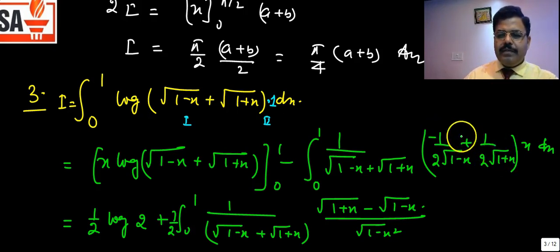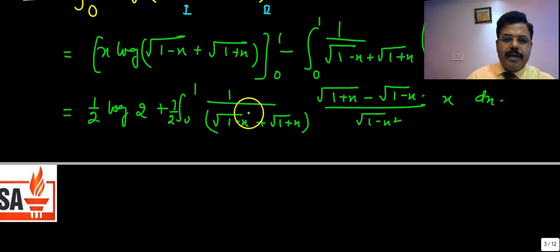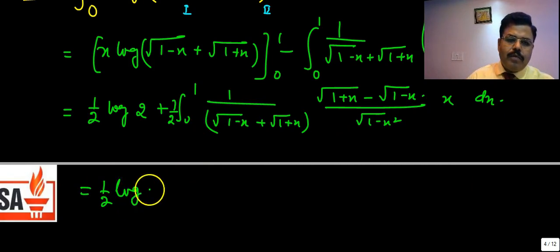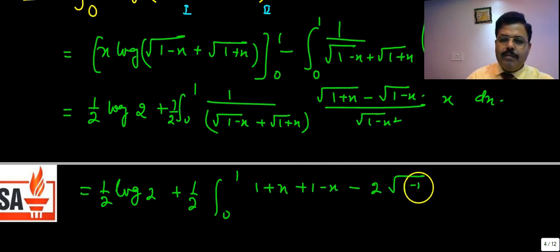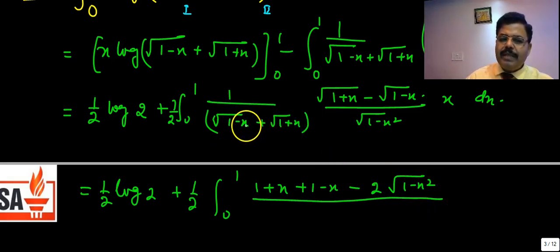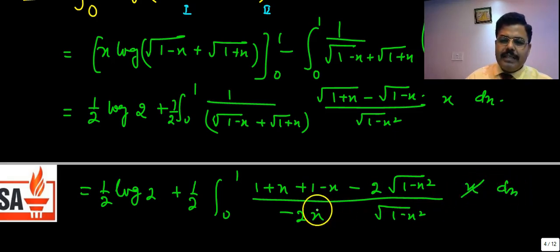After multiplying by the conjugate, the numerator becomes (√(1+x) − √(1−x))² = (1+x) + (1−x) − 2√(1−x²) = 2 − 2√(1−x²), and the denominator becomes (1+x) − (1−x) = 2x. The x in the denominator cancels with the x already present, leaving (1 − √(1−x²)) in the numerator, and a factor of ½ outside.